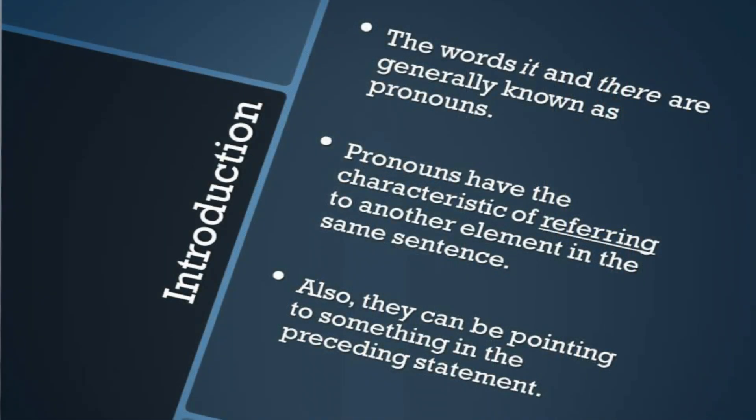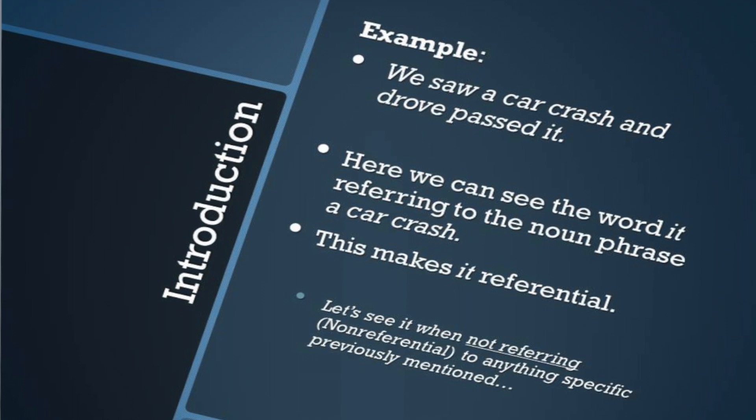First we need to know a little basis of what the referential it and there are. The words it and there are generally known as pronouns. Pronouns have the characteristic of referring to another element in the same sentence, or they can be pointing to something in the preceding statement. For example: 'We saw a car crash and drove past it.' Here we can see the word it referring to a noun phrase, a car crash. This makes it referential.